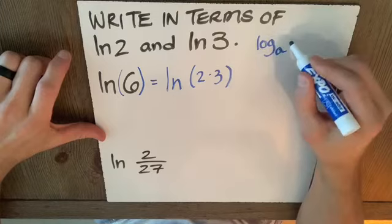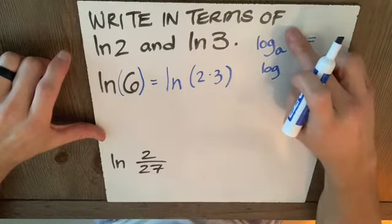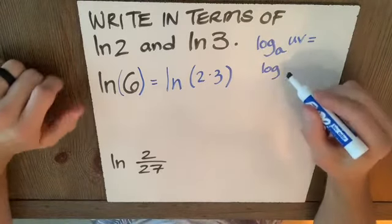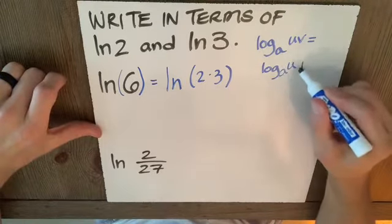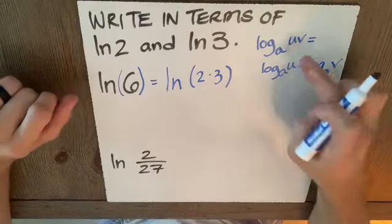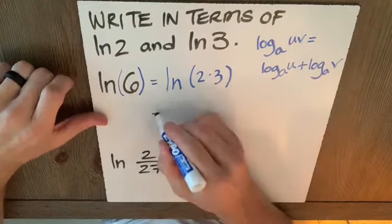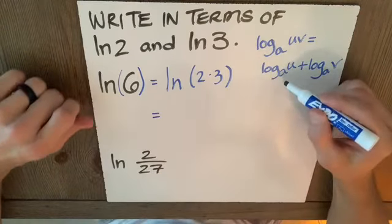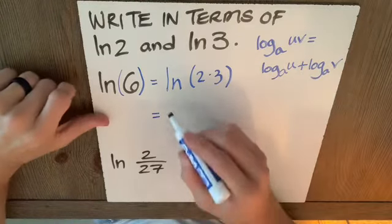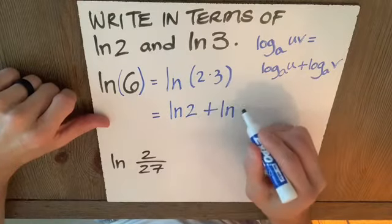Which, of course, if I know my properties, log base a of u times v is log a u plus log a v. Then playing the role of u today is 2. Playing the role of v today is 3. And playing the role of a, of course, is e, 2.71828. So this will be natural log 2 plus natural log 3.